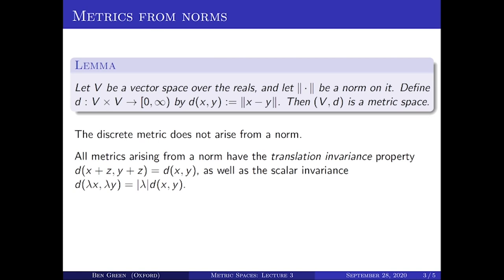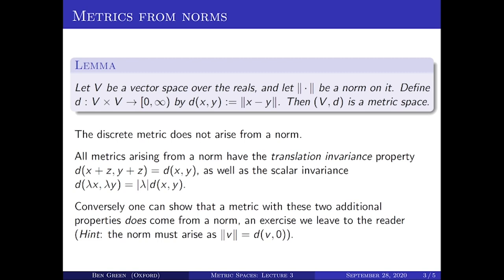This is a special construction of metrics on vector spaces. Conversely, you can show that if you have a metric on a vector space that is translation invariant and satisfies this scalar invariance property, then it does come from a norm. This is a fairly straightforward exercise if you take the hint: define the norm of V to be the distance from V to zero. Then all of the properties of a norm are almost immediate consequences from the axioms of a metric space, plus the additional translation invariance and scalar invariance properties.